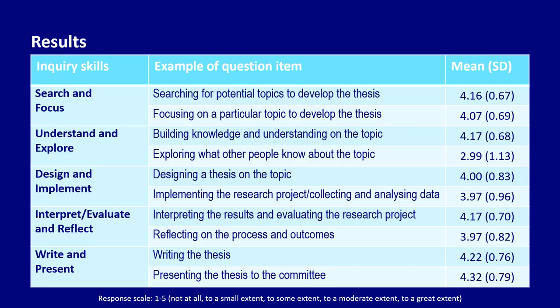Students reported that they develop skills related to building knowledge and understanding of the topic to a moderate extent; the mean value for this skill was 4.17. They engage with skills related to reading the literature, conducting an organized search to find key literature, recording and organizing information, and evaluating the literature found for quality and relevance. Students reported developing skills related to exploration about the topic to some extent; the mean value was 2.99. To a considerably greater extent, they are asking more knowledgeable others about the topic and discussing their topics with colleagues. Conversely, they are engaged to a lesser extent with attending learning events about the topic or posting questions about the topic on the internet.